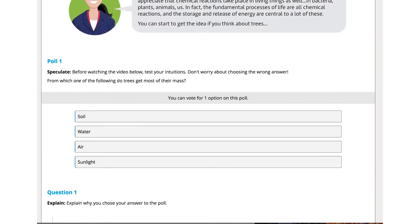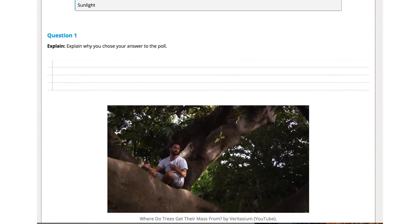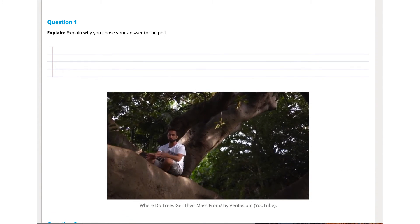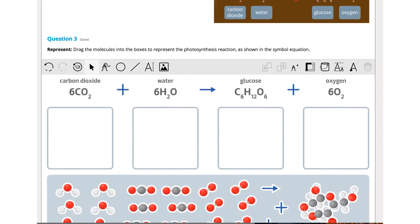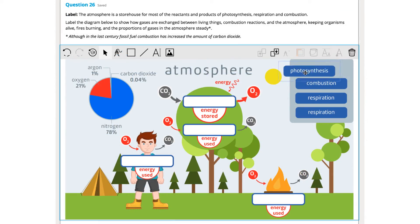In lesson three, we ask where trees get most of their mass—earth, water or air—before outlining the chemistry of photosynthesis and respiration, and then expanding this to a consideration of the roles of these reactions in earth systems.